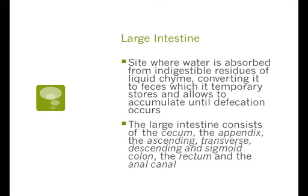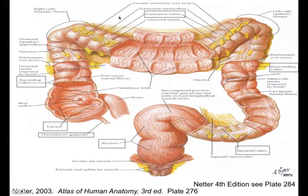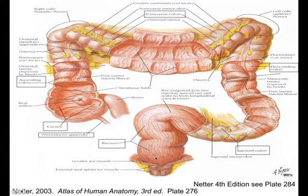The large intestine is the site where water is absorbed from indigestible residues of liquid chyme, converts it to feces, and temporarily stores it until defecation. The large intestine consists of the cecum, the appendix, the ascending, transverse, descending, and sigmoid colon, the rectum, and the anal canal. The names are kind of obvious — they're named by their shape and where they are. The sigmoid is an S-shape, which gives it the name sigmoid.